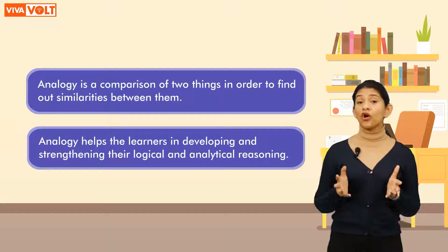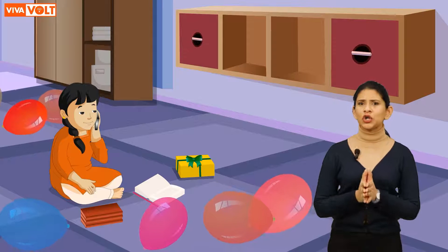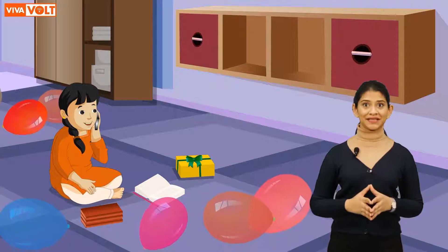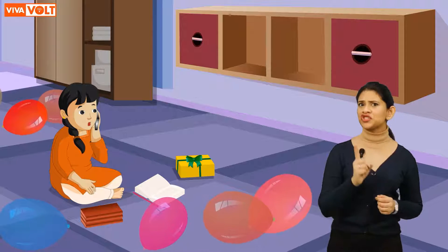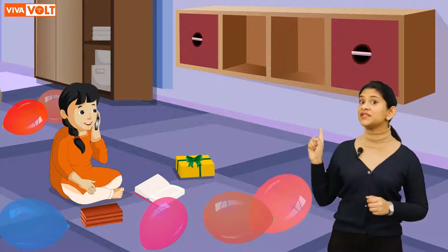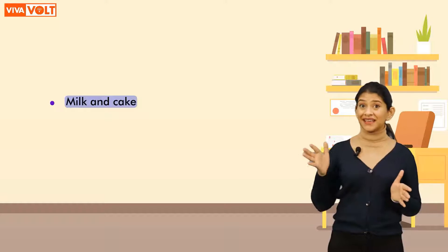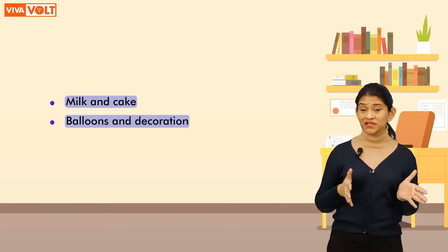Let's look at an example. Meet Aman — he is very excited today as his family is hosting his birthday party. His mother bakes a cake, his father decorates the house, and his sister looks after inviting all the guests. Now, I have a question for you related to this situation: is there any relation amongst all these things used in the party — milk and cake, balloons and decoration, cards and invitation?